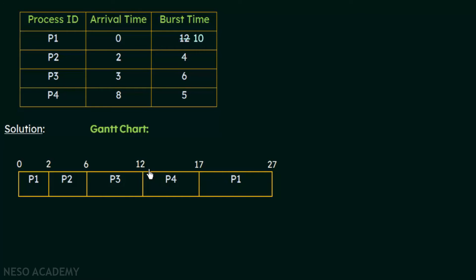At the 12th millisecond, the remaining processes are P4 with burst time 5 milliseconds and P1 with remaining burst time 10 milliseconds. P4 is smaller, so P4 gets the CPU at time 12 and executes for 5 milliseconds, completing at the 17th millisecond. Then P1 gets the CPU at time 17 and executes for 10 milliseconds, completing at the 27th millisecond.